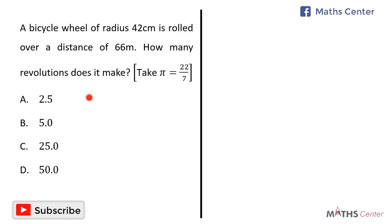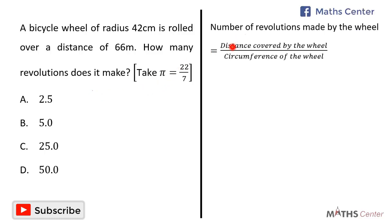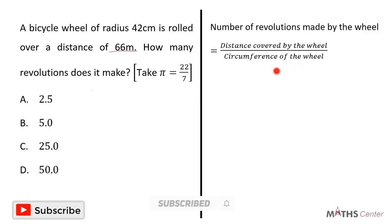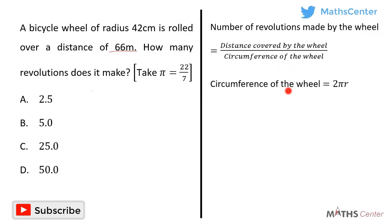So here, the number of revolutions made by the wheel will be equal to the distance covered by the wheel — which is given to us as 66 meters — divided by the circumference of the wheel. So we have to find the circumference of the wheel. The circumference of the wheel will be given by the formula 2πr, where r is the radius of the wheel.